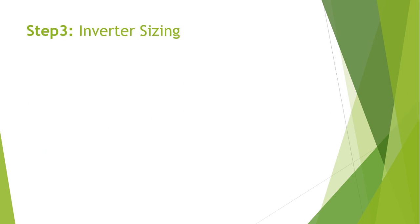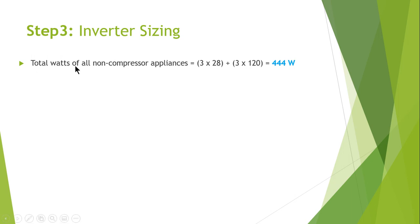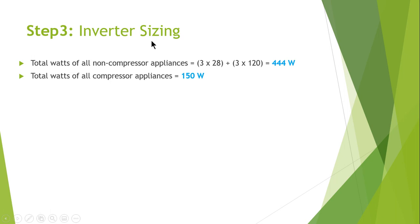In the next step, we estimate the inverter size. The total watts of all non-compressor appliances are: three bulbs (3 × 28) plus three fans (3 × 120), which equals 444 watts total for non-compressor motor appliances.